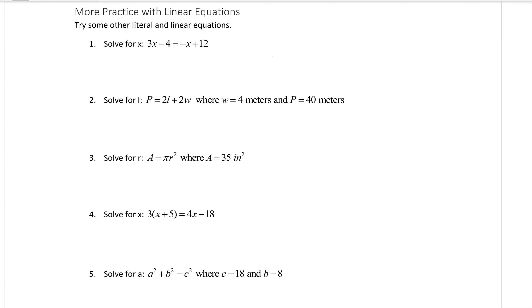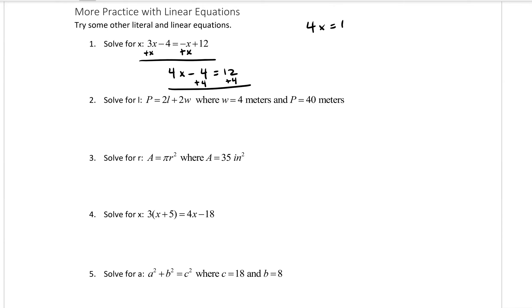Below we have some examples of solving equations. Most of them are linear; number 5 is not linear. For the first one, we add x on both sides to get 4x minus 4 equals 12, then add 4 to get 4x equals 16, then divide both sides by 4 to get x equals 4.